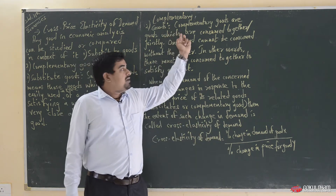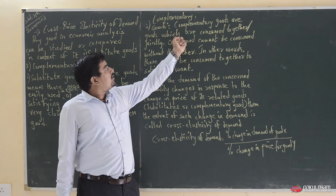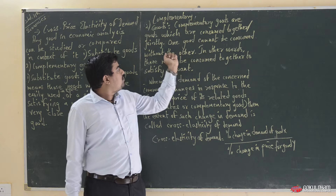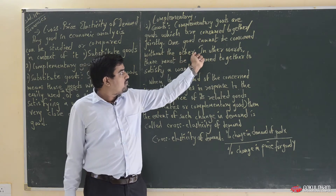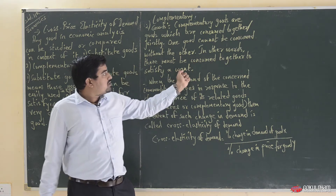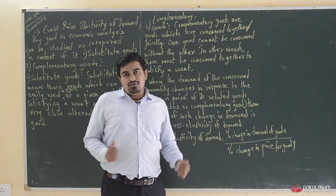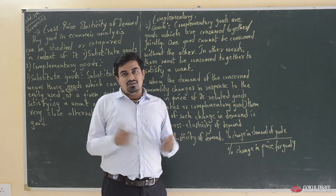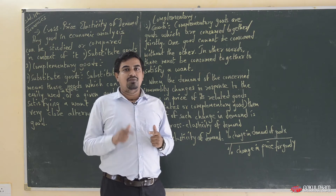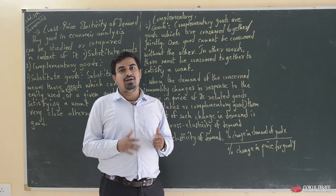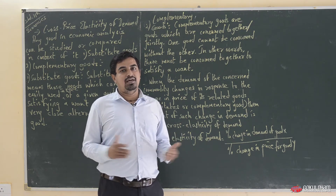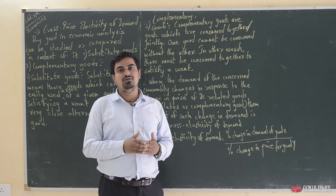The second type is complementary goods. Complementary goods are goods which are consumed together, jointly. One good cannot be consumed without the other. In other words, these must be consumed together to satisfy a want. So complementary goods are those goods whose consumption or use is joint. If one of the complementary goods is not available, then their joint consumption will not be possible — you can only use them jointly.